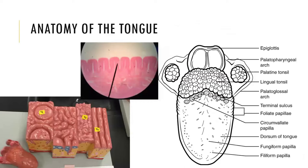The tongue also has its own anatomy, and to get a glimpse at what that looks like, you can see this image here. The tongue is basically composed of skeletal muscle, which manipulates the food. We also know the tongue helps us form words and serves as a sensory organ.